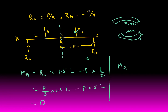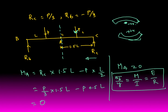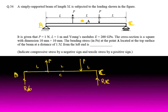The bending moment at point A is 0. Using the bending stress formula σ_B/Y = M/I = E/R, we get σ_B = M×Y/I. Since M = 0, the bending stress σ_B = 0 at point A. This is a fill-in-the-blank question, so the answer is 0. There is no negative marking for this question.